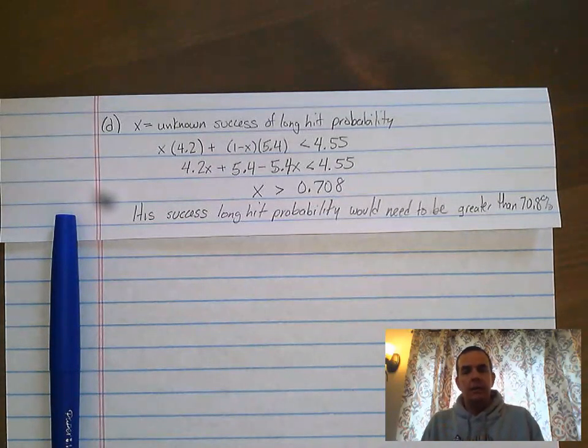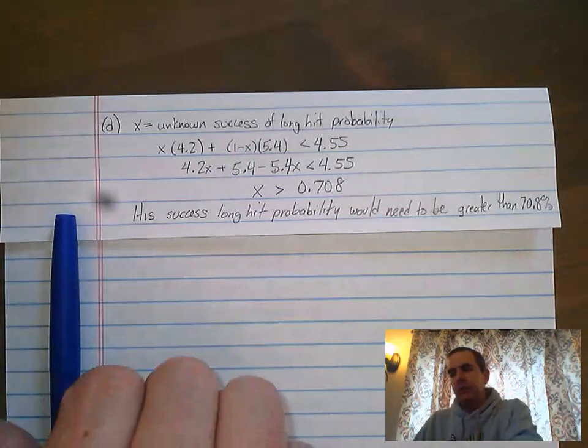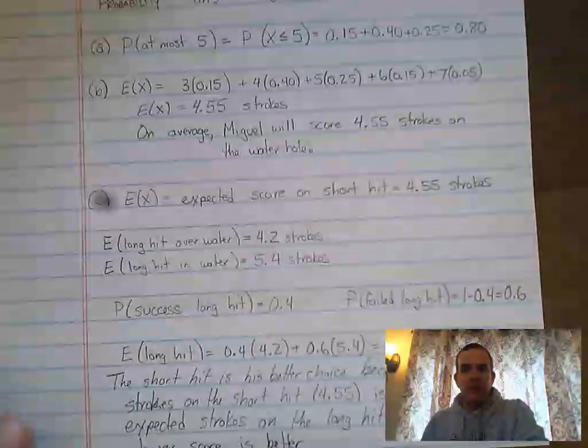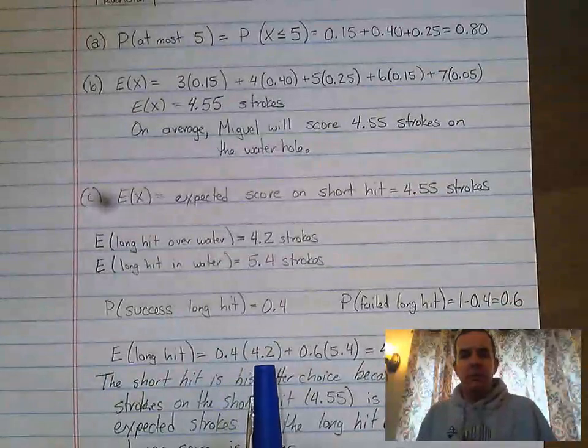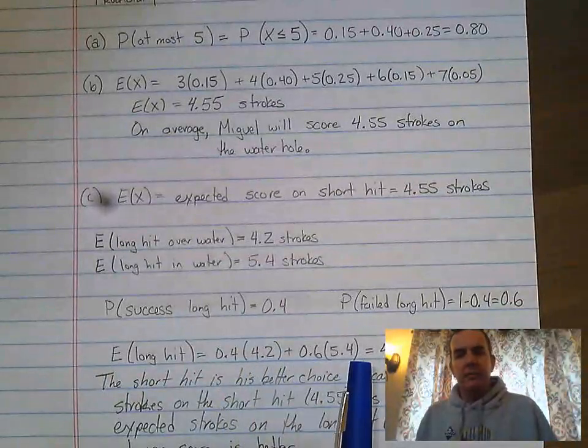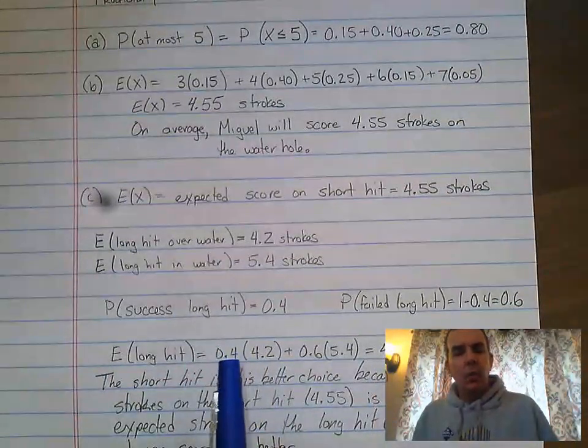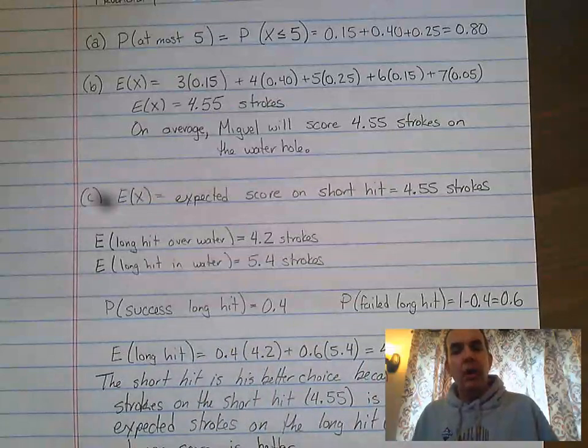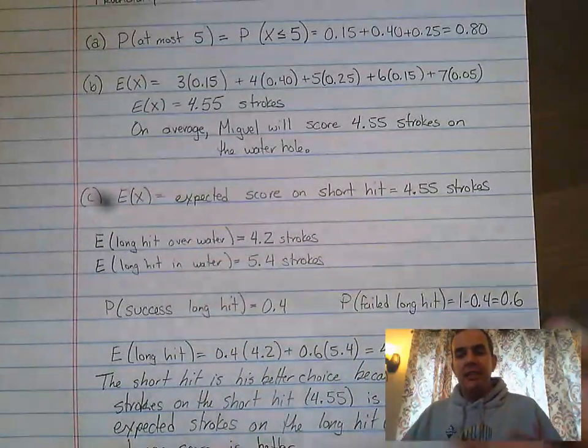If we went back and looked at our problem from before, where we had this expression, 0.4 times 4.2, 0.6 times 5.4, it's asking you what does this first number, this 0.4, have to be in order for it to be advantageous or better for him to go with the long hit?